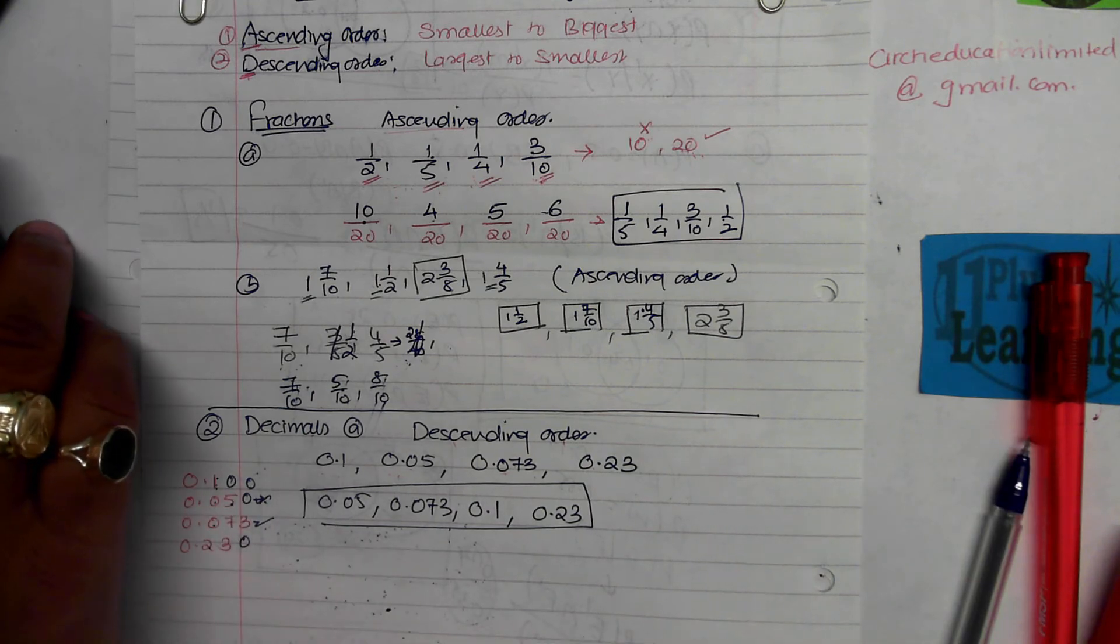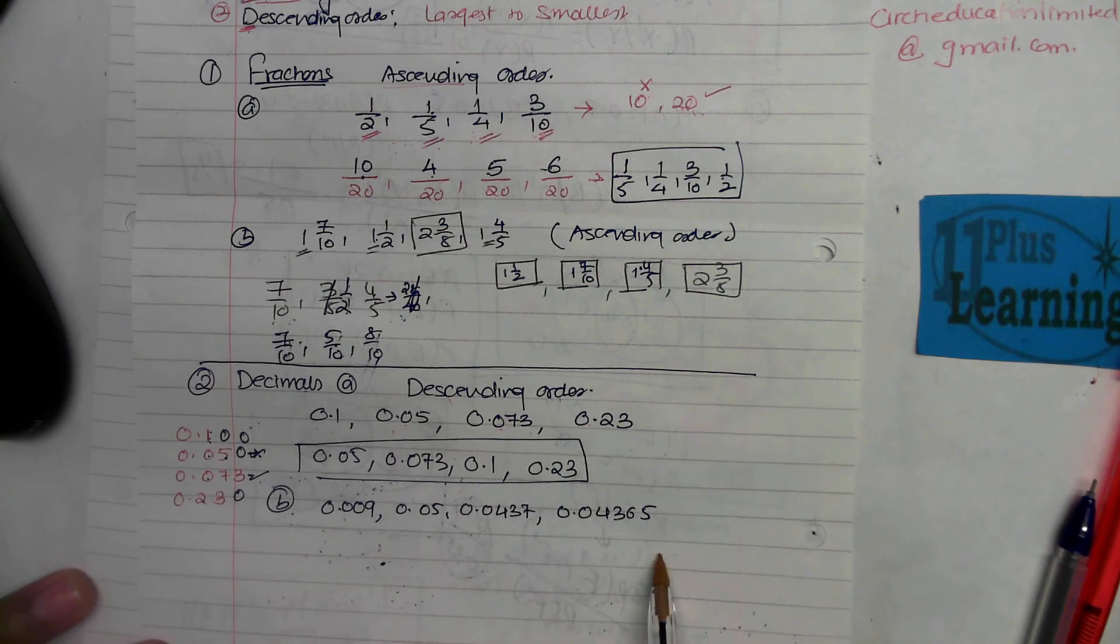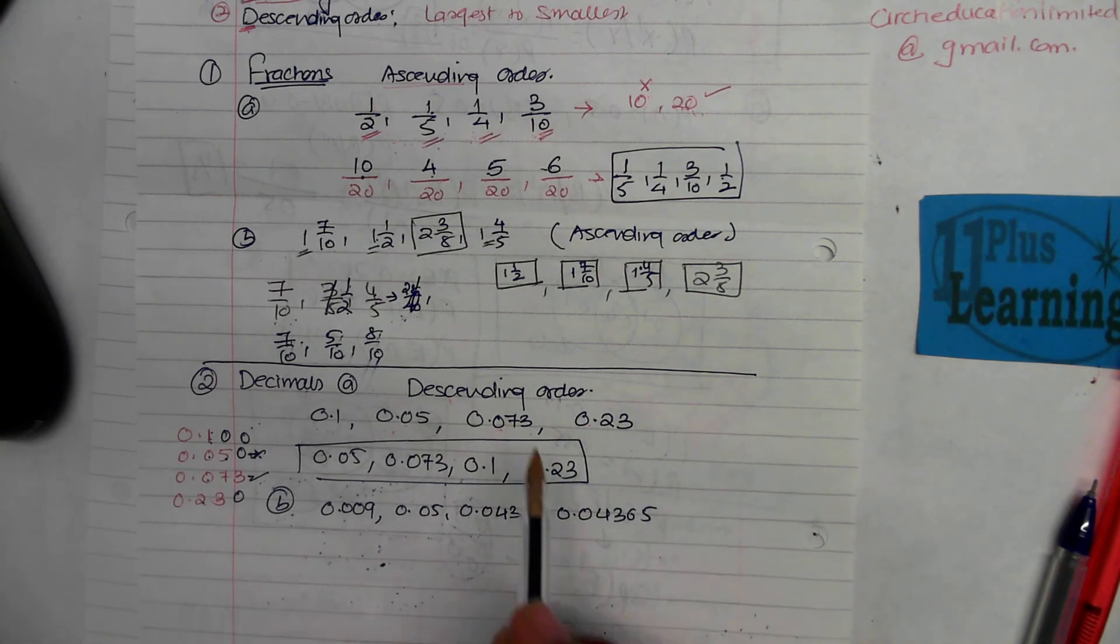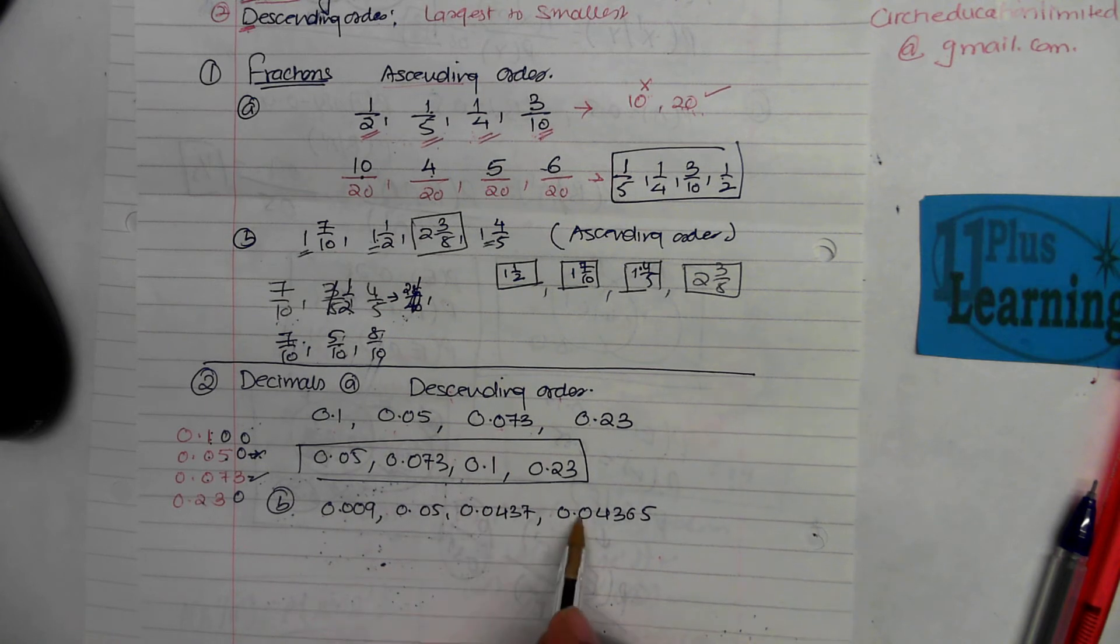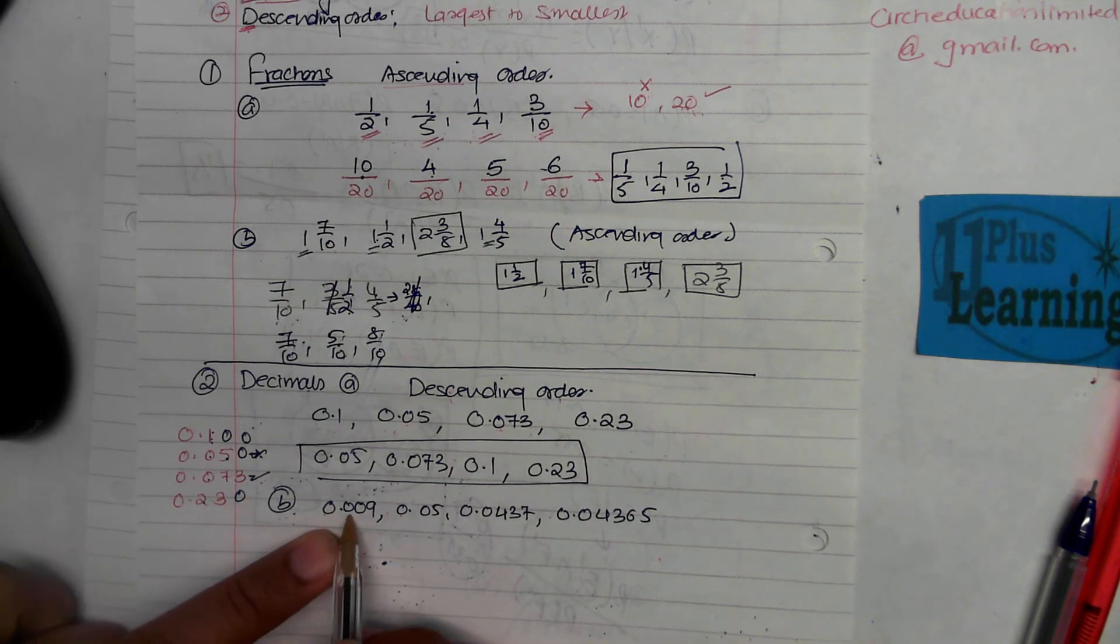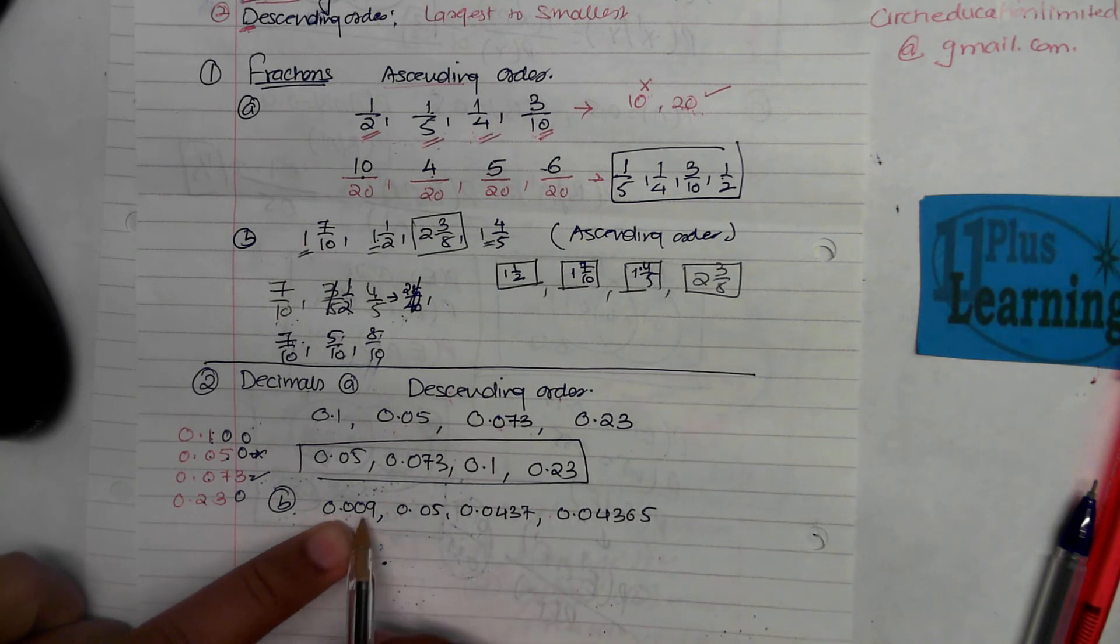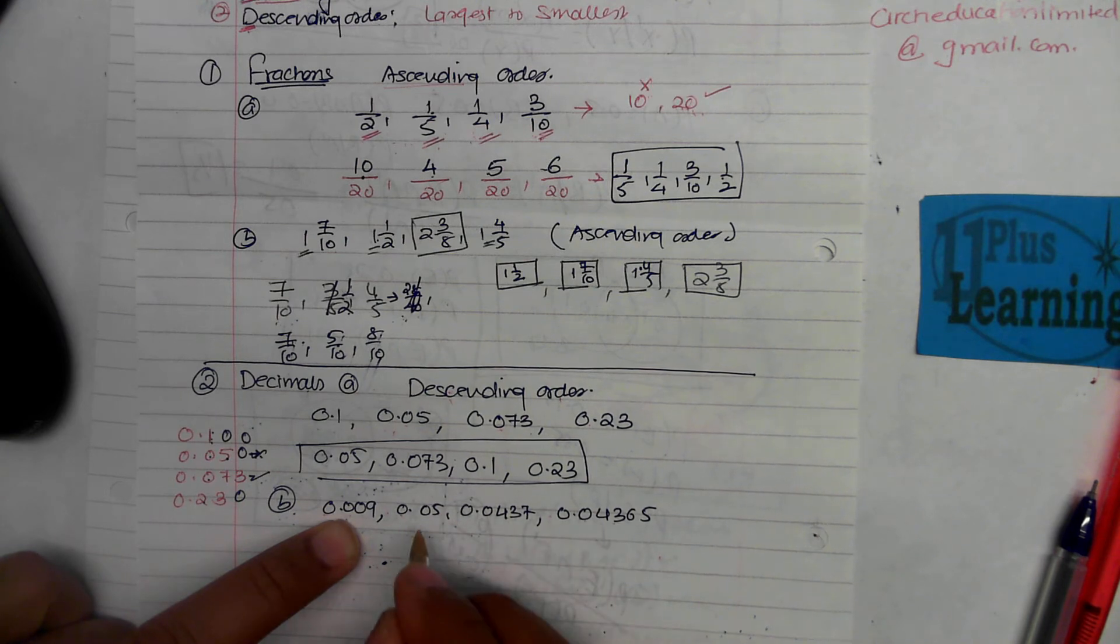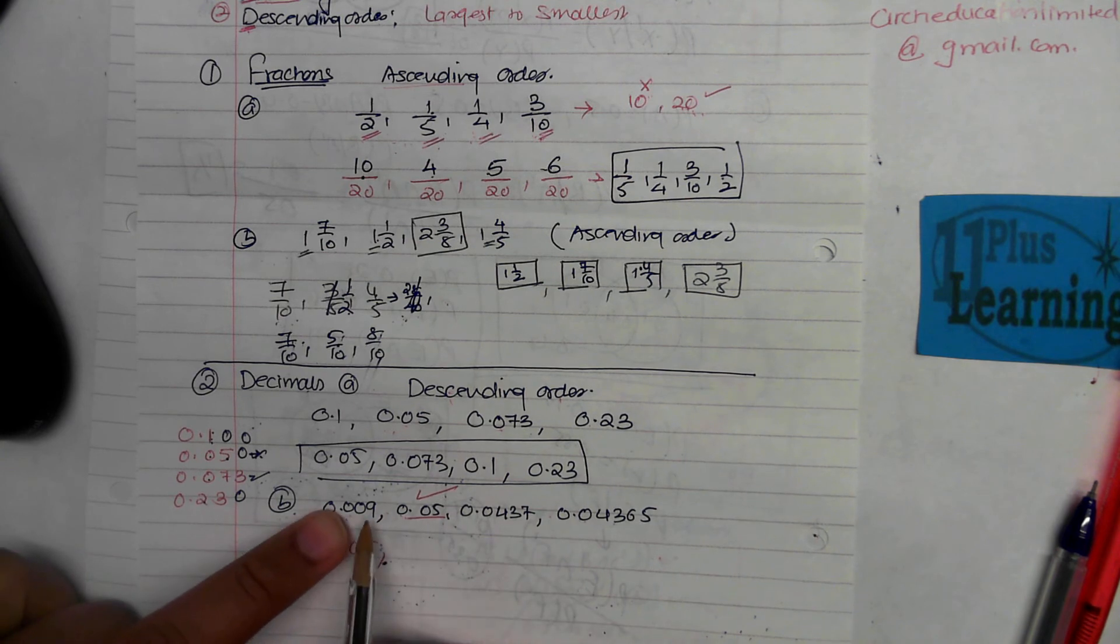We move on to the next question in decimals. Similar question. We will write them in descending order again. Let's say, looking for the numbers which is the biggest one. Zero whole number part: zero, zero, zero, zero. I can't compare. First tenth place: zero, zero, zero, and zero. I can't compare. Hundredth place: five, four, and four. So five is the biggest: 0.05. So I've done that.